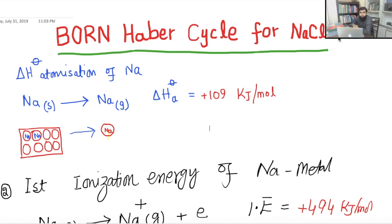Today I will teach you about the Born-Haber cycle for the formation of NaCl. The Born-Haber cycle is actually the application of Hess's law. According to Hess's law, a reaction occurs in a single step or in multiple steps, and the overall energy change always remains the same.